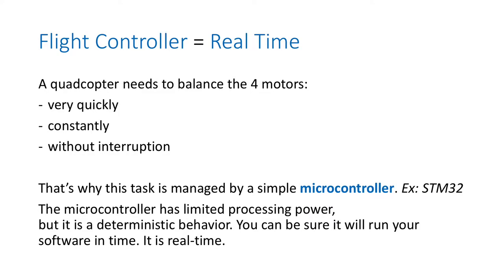The flight controller is in charge of the real-time aspect of the drone. For example, a quadcopter needs to balance the four motors. It has to be done very quickly, constantly, and without interruption. That's why this task is managed by a microcontroller. A microcontroller has limited processing power, but it has a deterministic behavior — that's the way it is built — so you can be sure it will run your software in time. It is real-time.